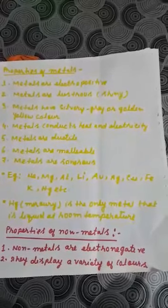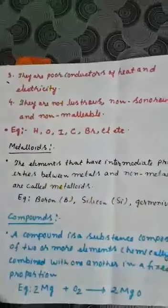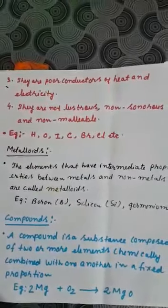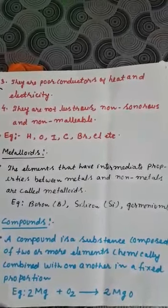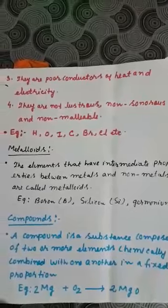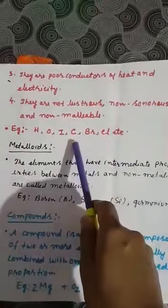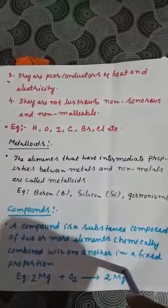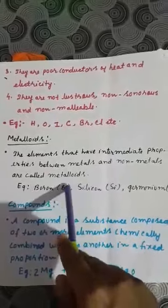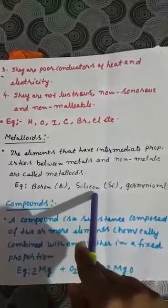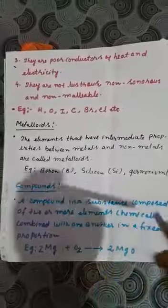Non-metals are electronegative. They display a variety of colors and are not very shiny. Non-metals are poor conductors of heat and electricity, and they are not lustrous, not sonorous, and not malleable. Some examples are hydrogen, oxygen, iodine, carbon, bromine, and chlorine. Some elements have properties in between metals and non-metals — these are called metalloids. Examples include boron, silicon, and germanium.